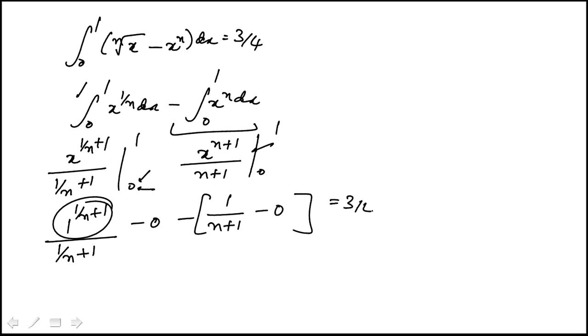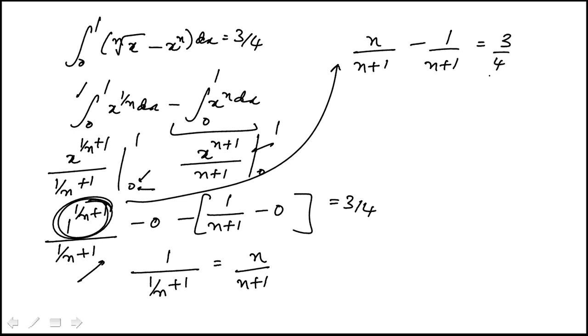So this is equal to 3 fourths. That becomes 1 in the numerator, 1 over 1 over n plus 1, which is n over n plus 1. So our first term minus 1 over n plus 1 equal to 3 fourths. Same denominator, so I just combine those and then cross multiply.